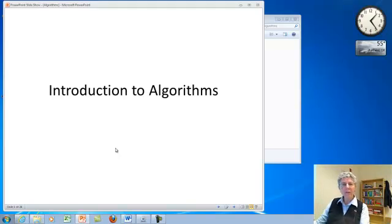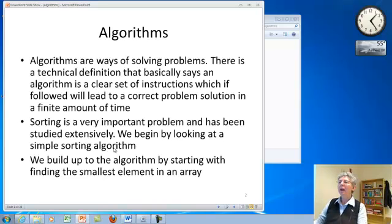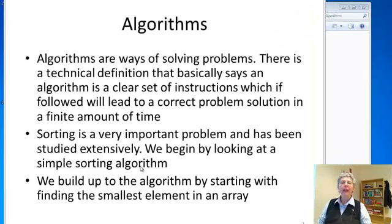In this video, we're going to take our first look at a reasonably complex algorithm. An algorithm has a technical definition, but basically it's a way of solving a problem that happens in a finite amount of time and gets to a definite answer. An example that's often used to illustrate algorithms is sorting, because that's a task that has to be done all the time, it's very common and there are lots of different ways to do it.